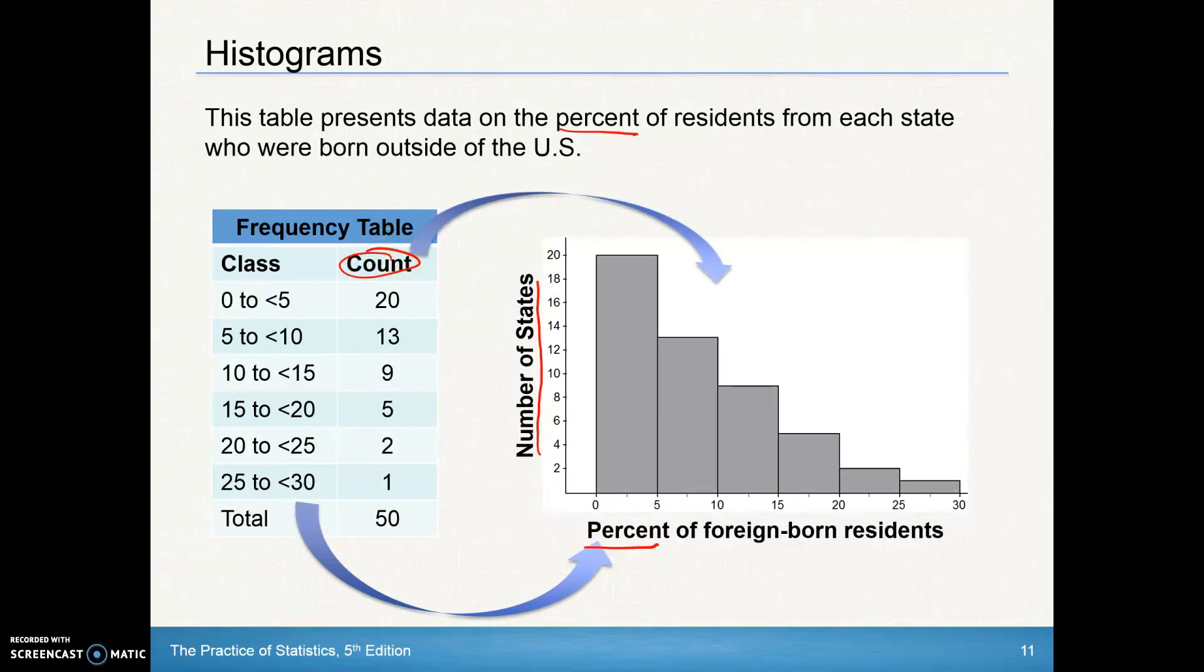And this is the number of states. We're just doing counts rather than percentages, as you can see here. And it's a matter of just stacking those bars up. You see that there's 20 in this first class from 0 to 5.